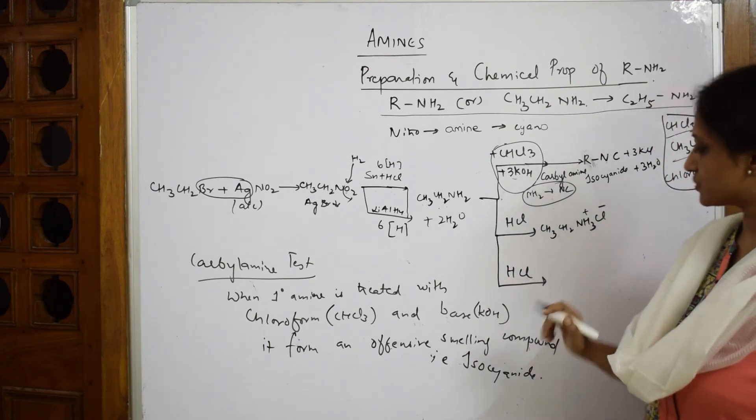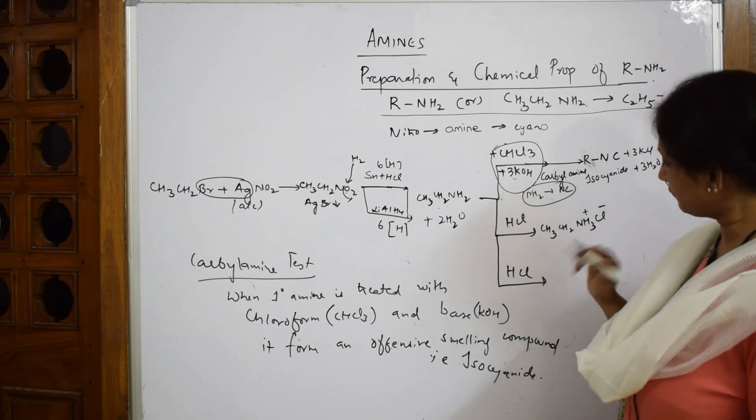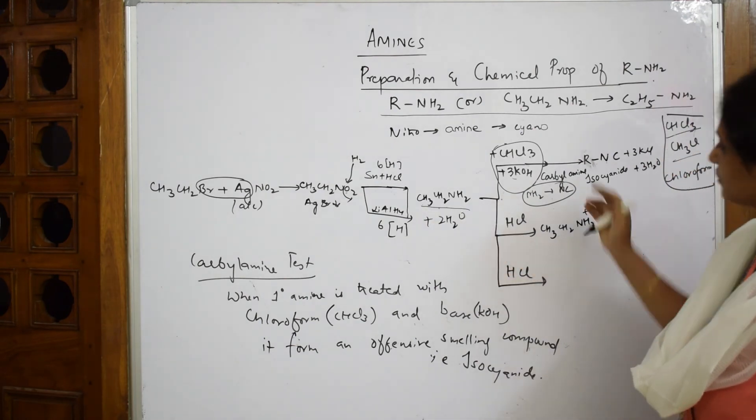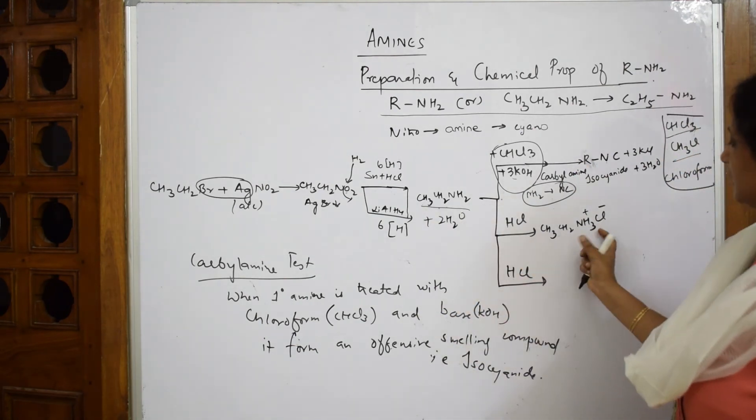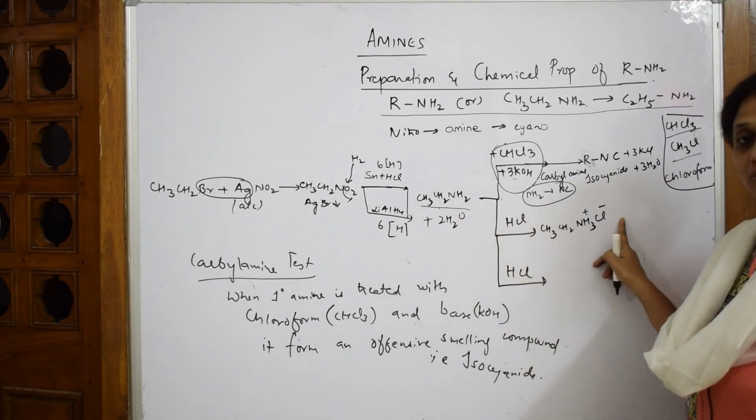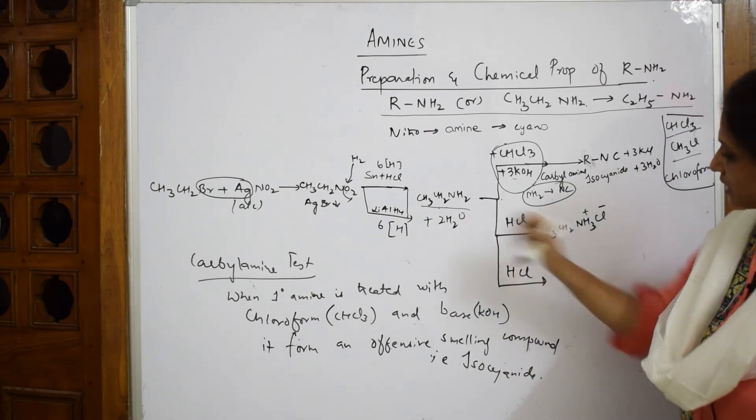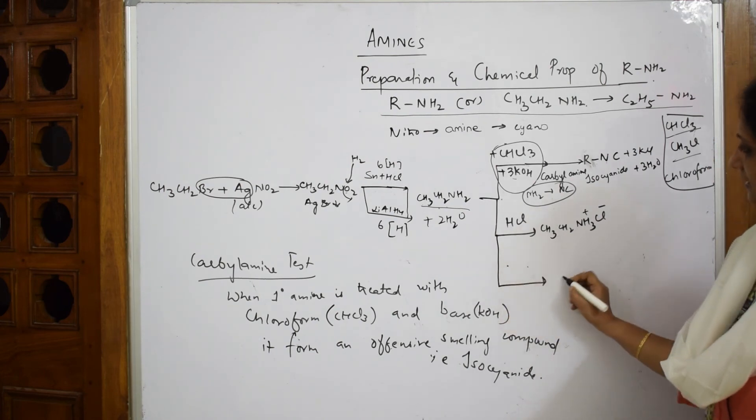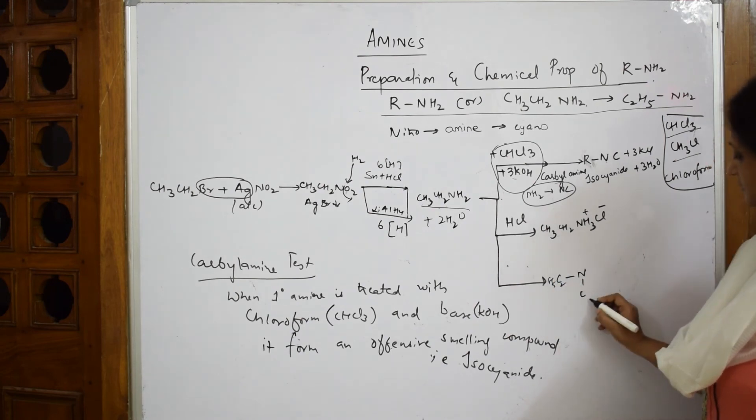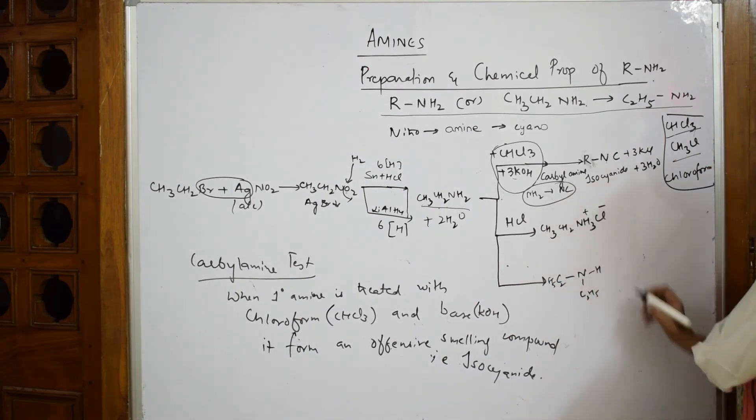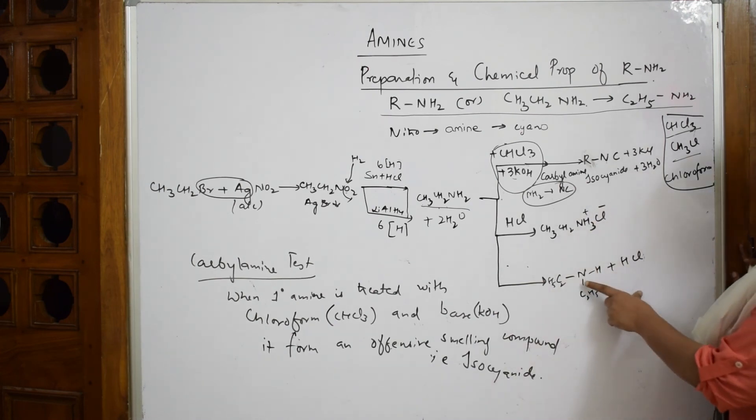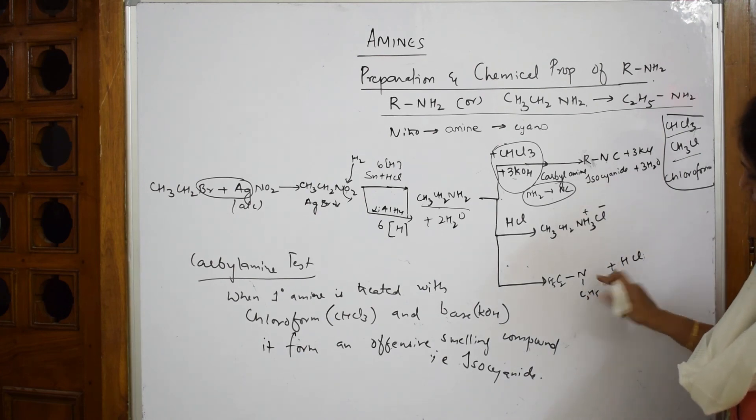Instead of primary amine, if I have secondary amine, let us see now. C2H5-C2H5-NH and N-ethyl ammonium chloride. I am going to add HCl to this, same story isn't it? Now if this becomes C2H5 taken twice and NH2+ Cl-.